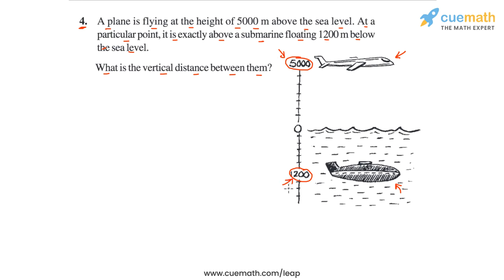We can simply add these two distances to find the total vertical distance between the plane and the submarine, which comes out to be 6200 meters. But since this is a question from the chapter on integers, let's write out the solution using integers.